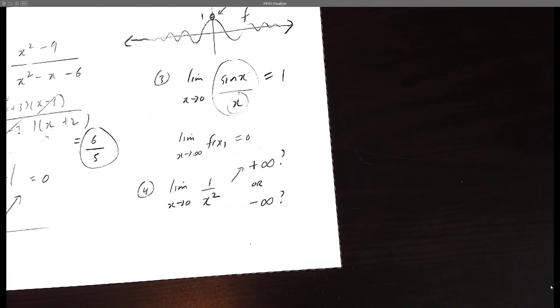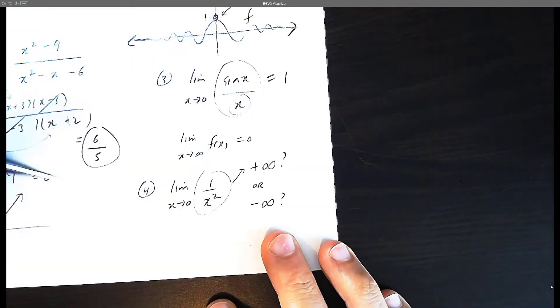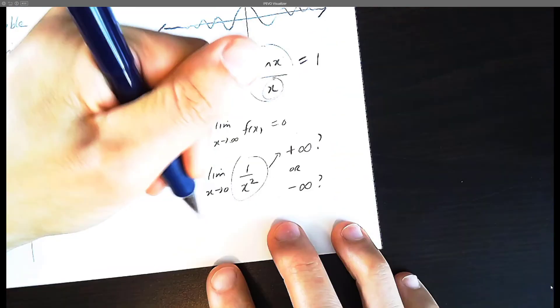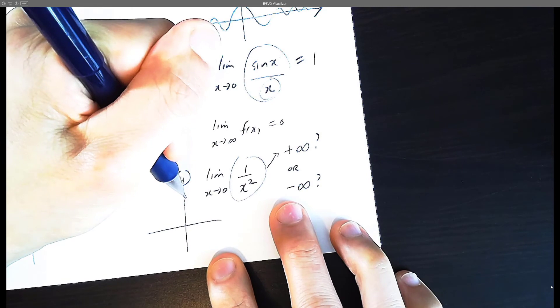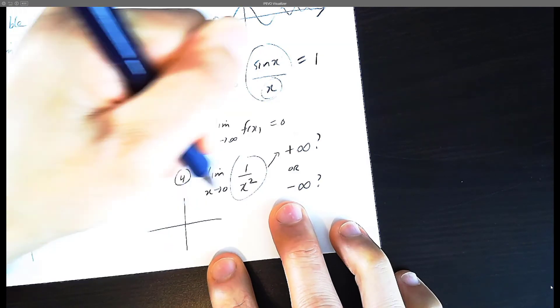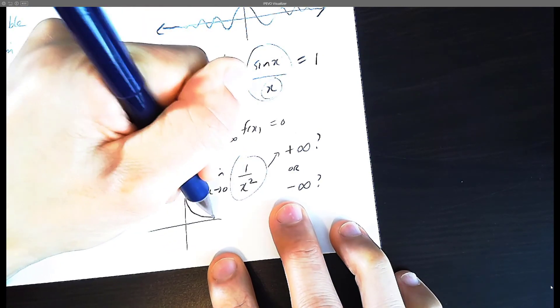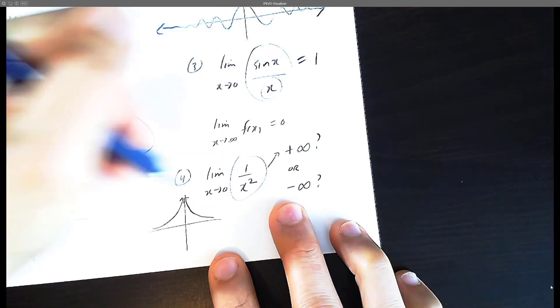Now let's focus on this last question. This is another base function hopefully you've memorized. You know the 1 over x graph looks like this. But the 1 over x squared graph flips upwards because you can't have a negative number when something is squared.